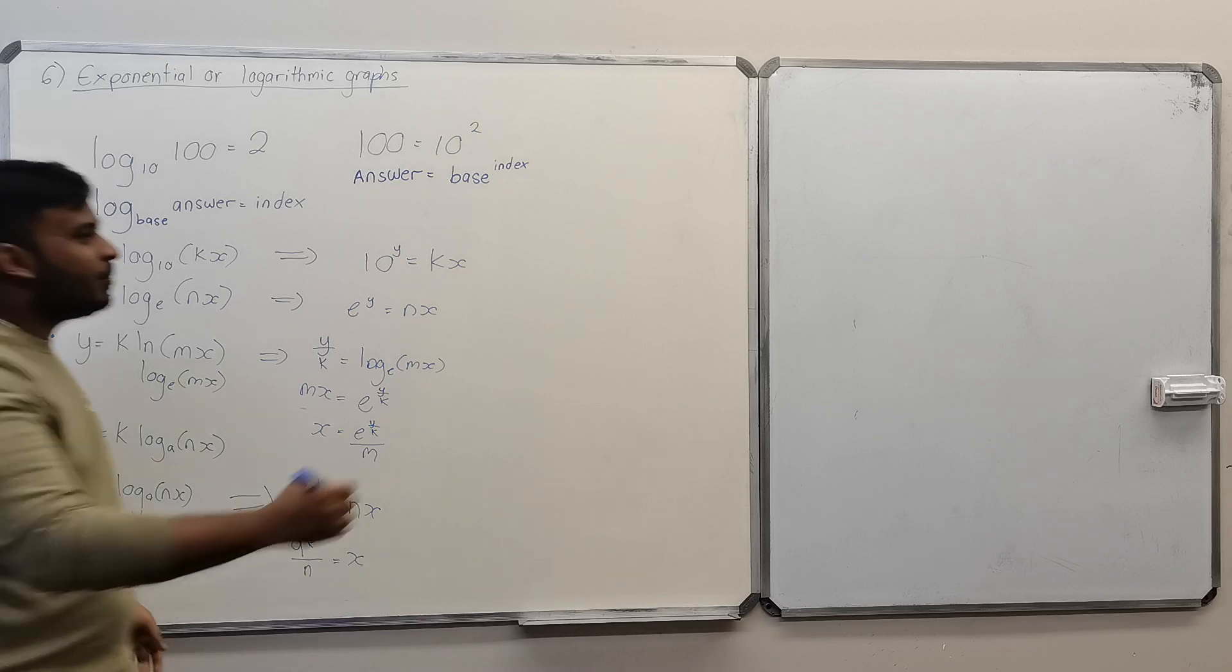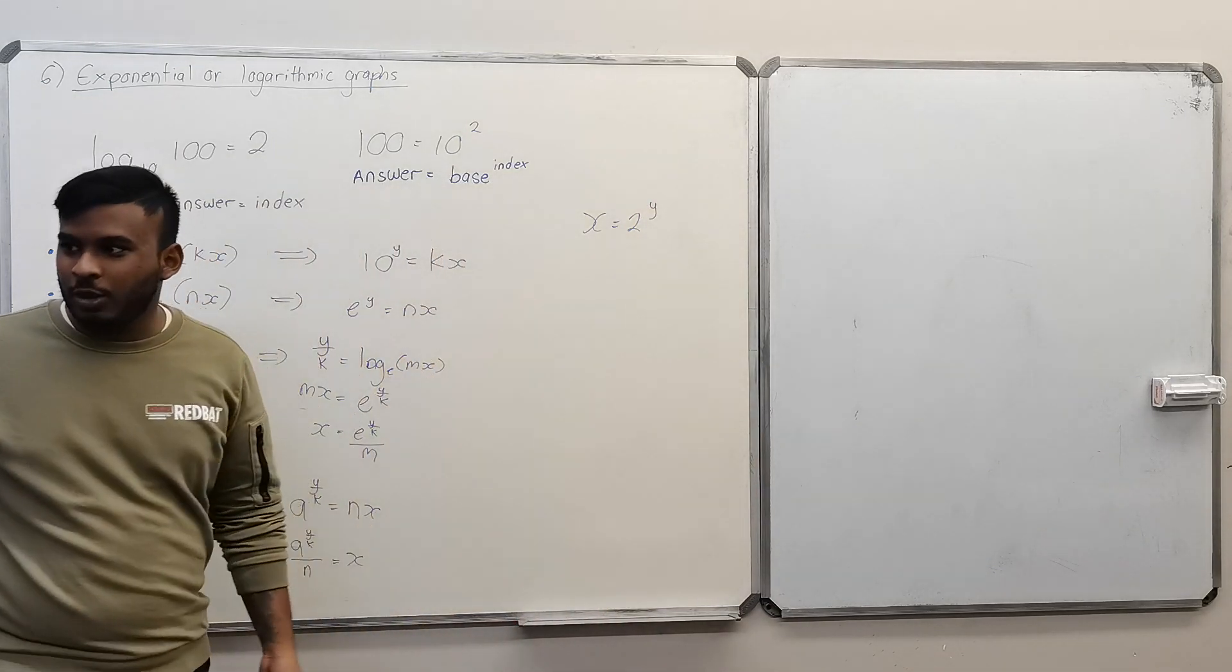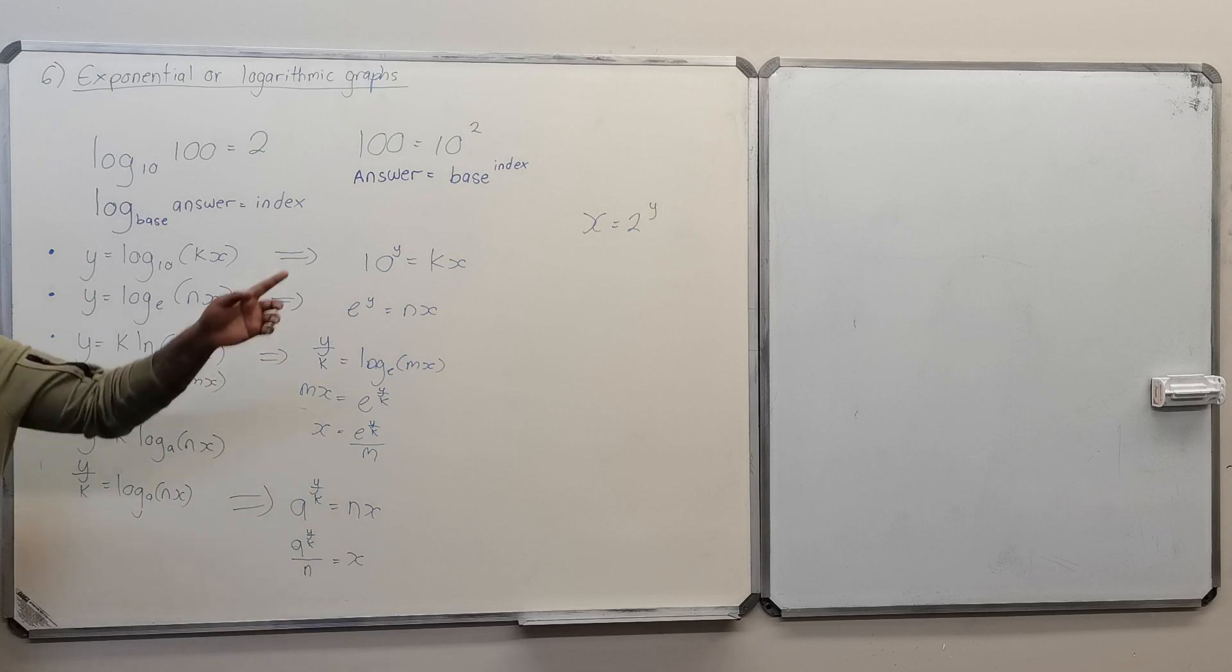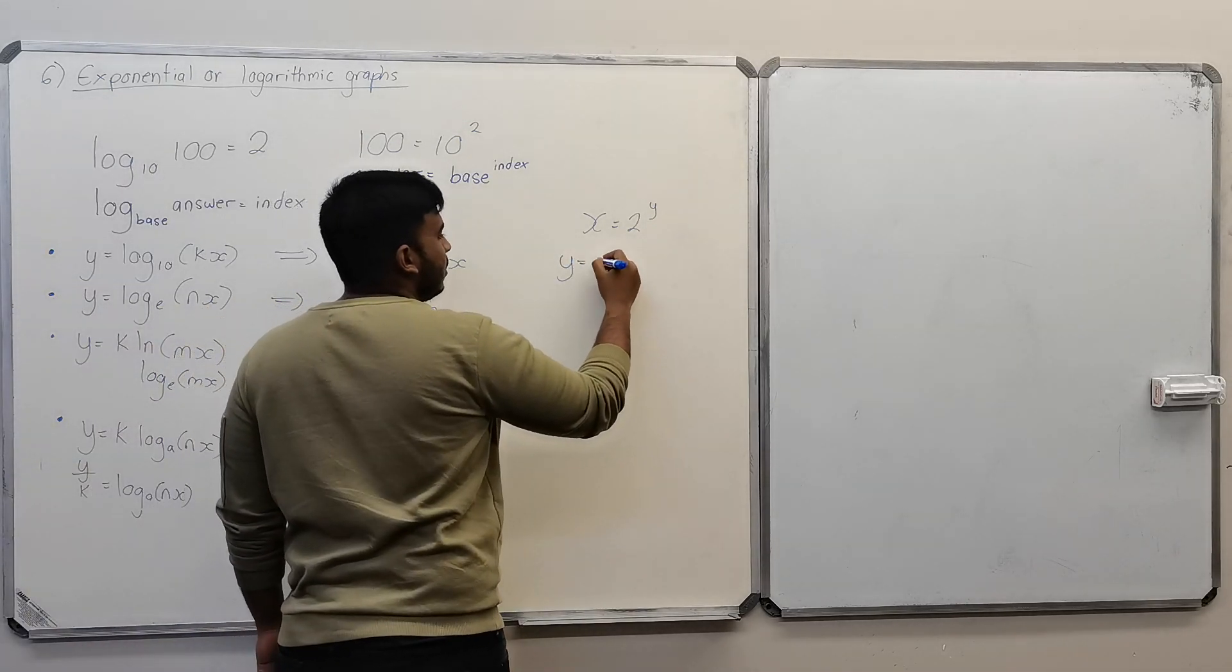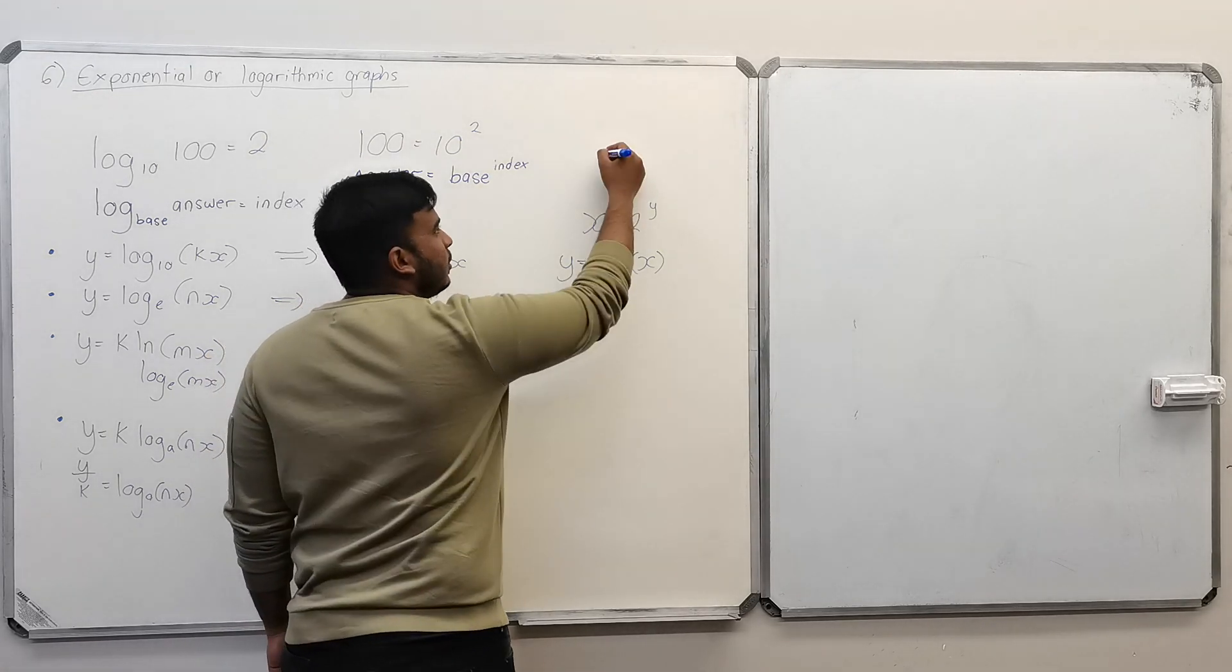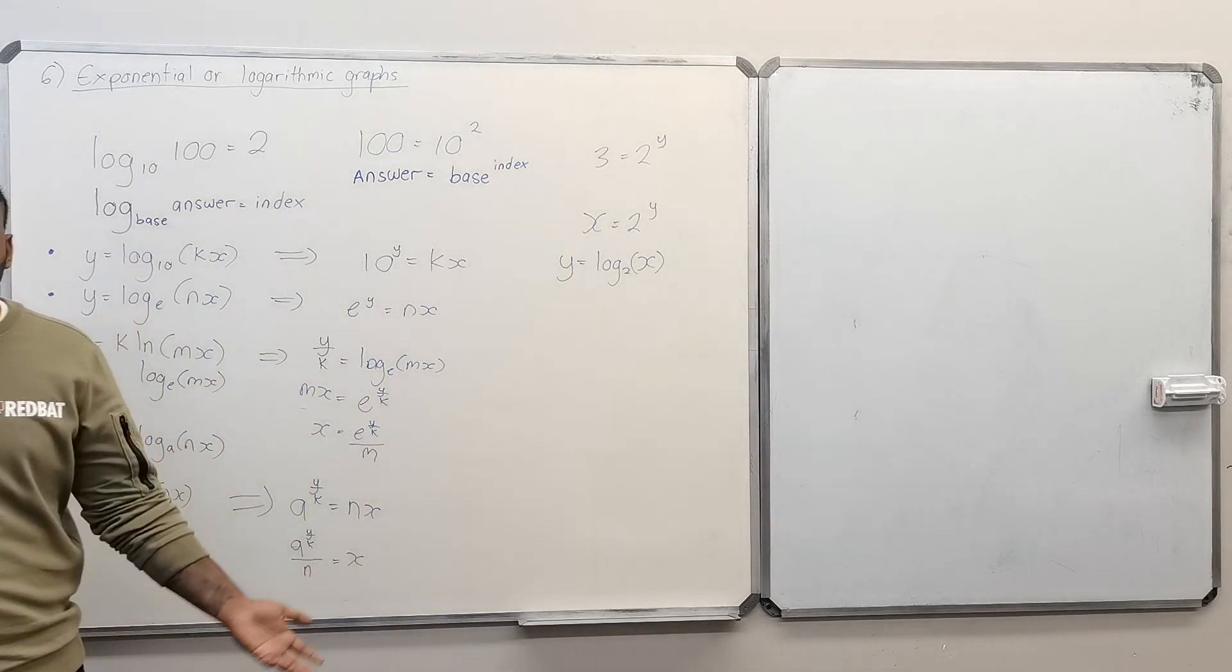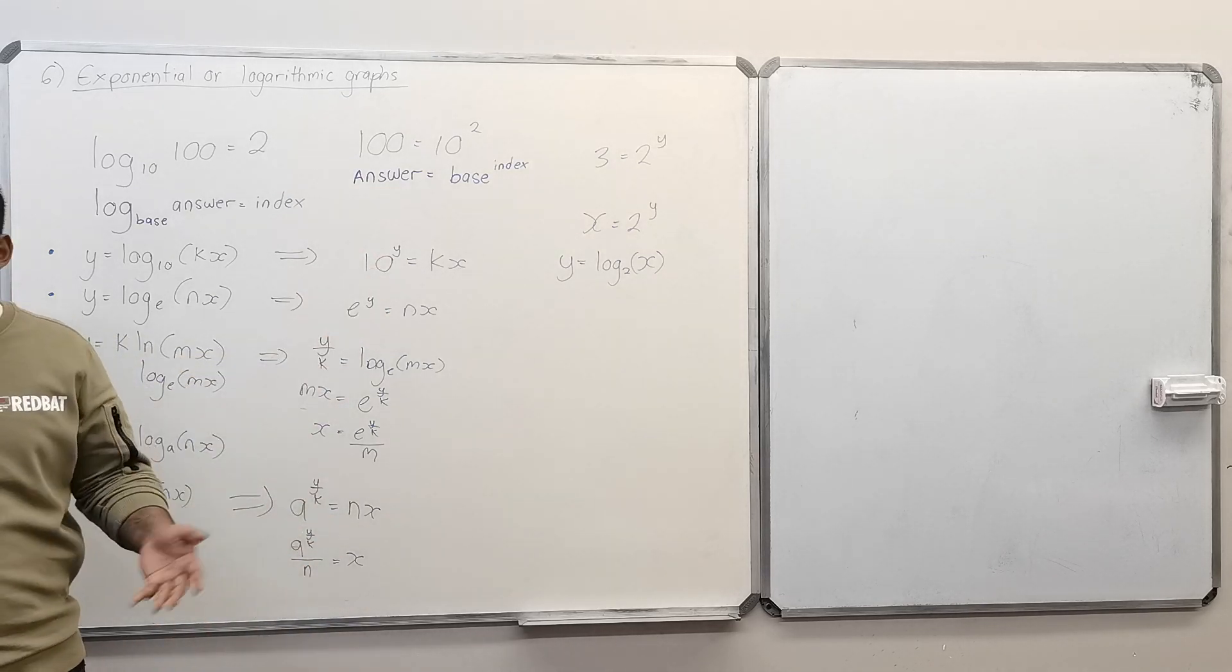And why we use logs: say for example you have x = 2^y, and if I ask you to solve for the value of y, how are you going to solve the value of y? You're converting it to log functions. You can substitute any value of x and get an answer for y. You can't divide by 2, you can't square root. You have to convert it into logs to make it in terms of y. That is why we used logs.